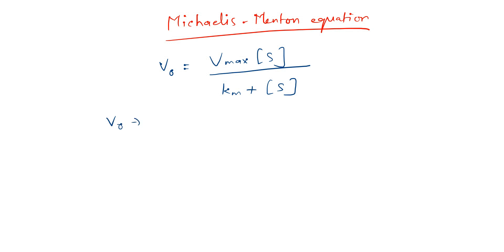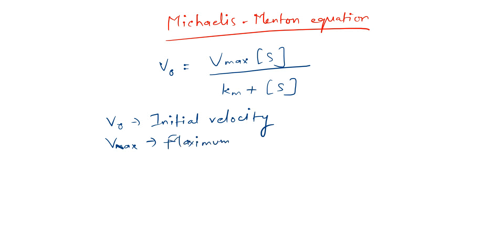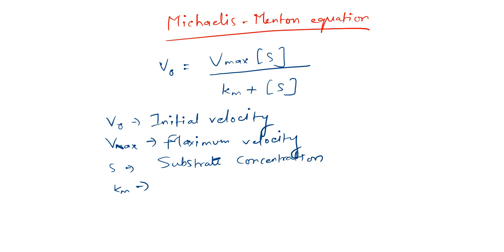Let me denote each of these terms. v0 is the initial velocity of the reaction. Vmax is the maximum velocity of the reaction. S is the substrate concentration. And Km is the Michaelis constant — where M stands for Michaelis.